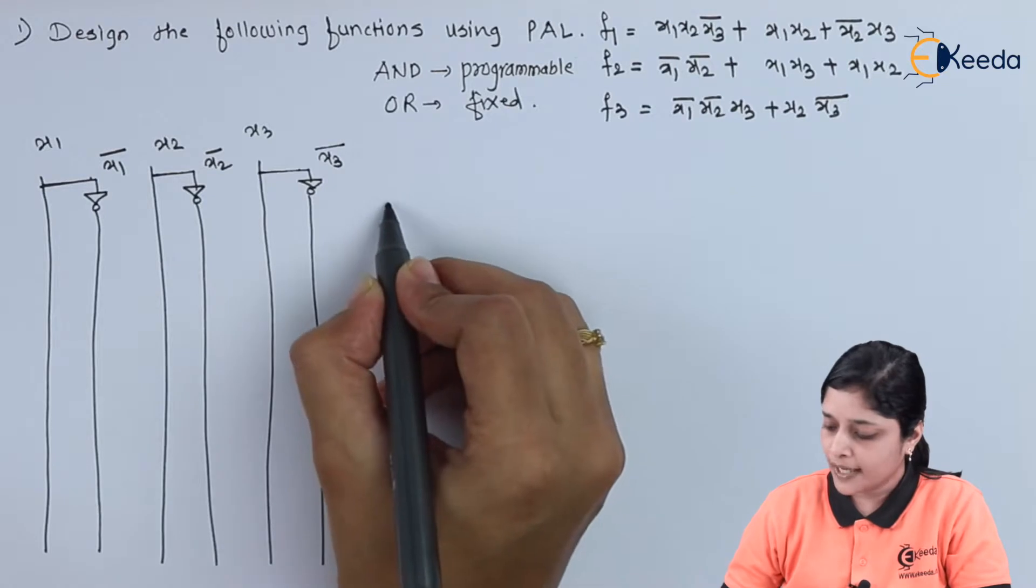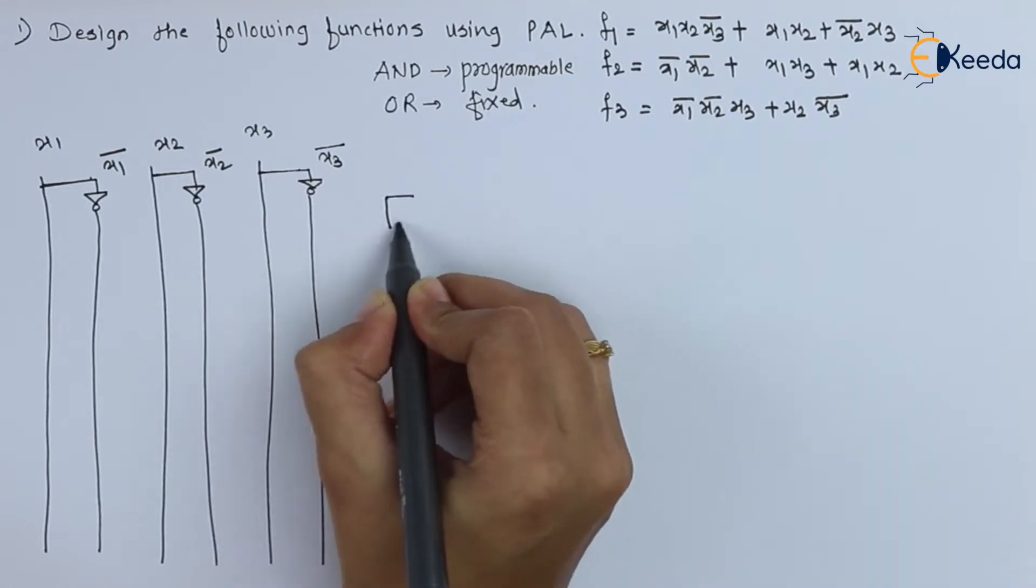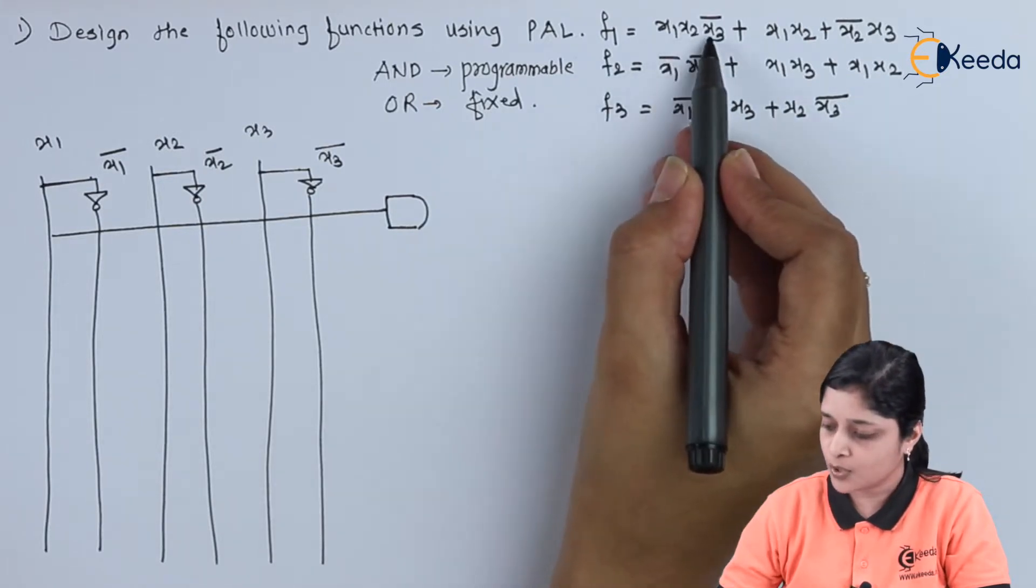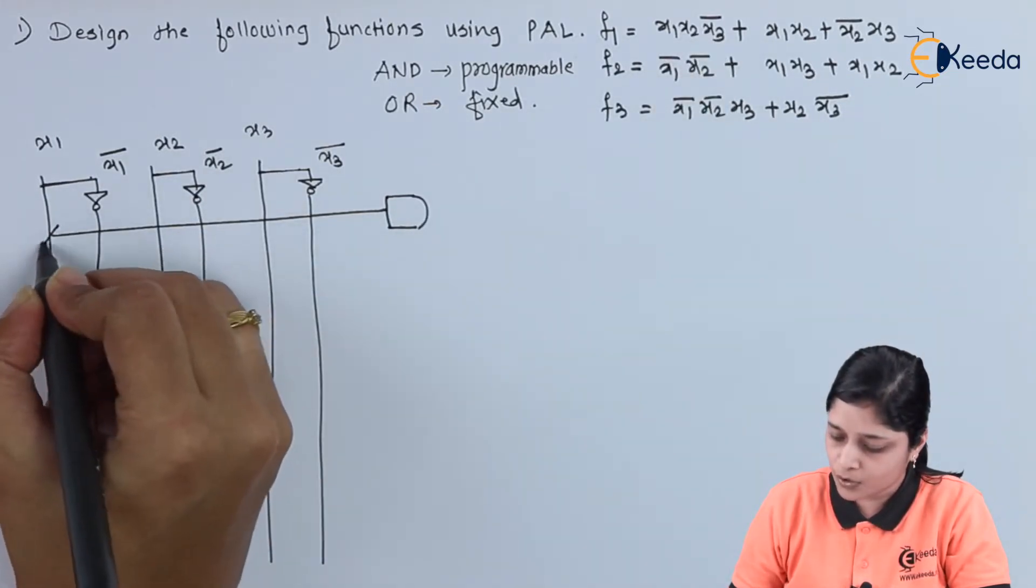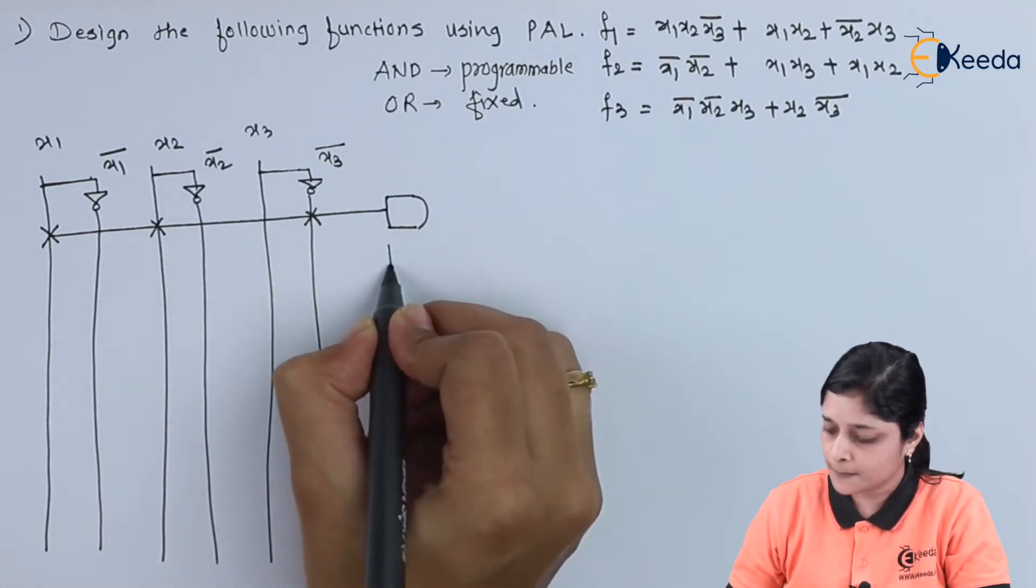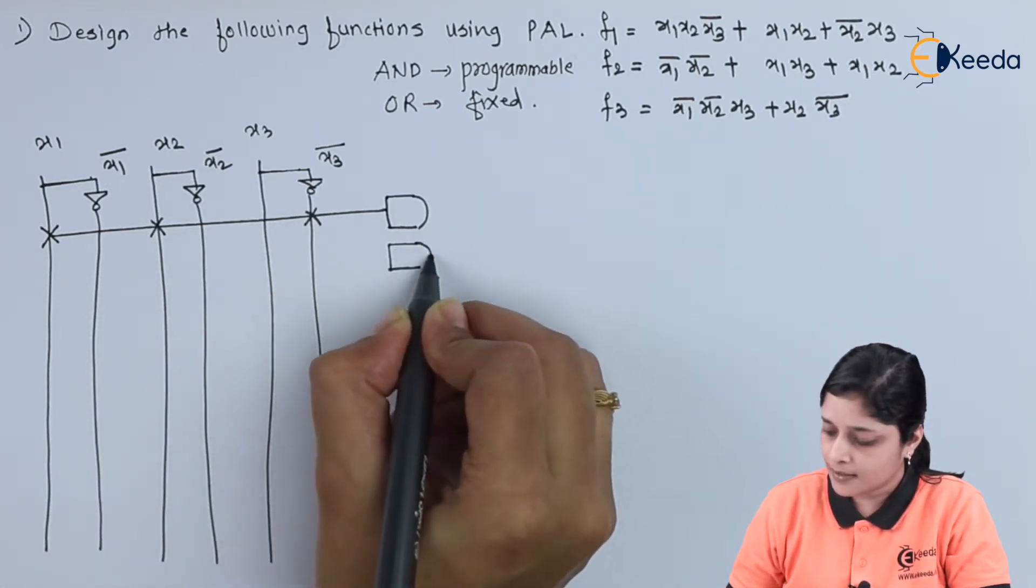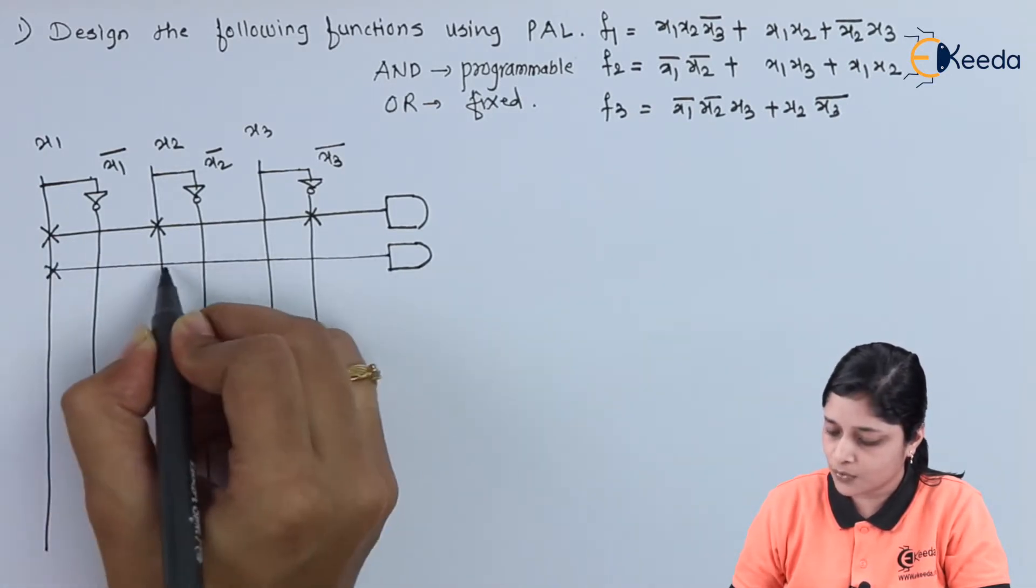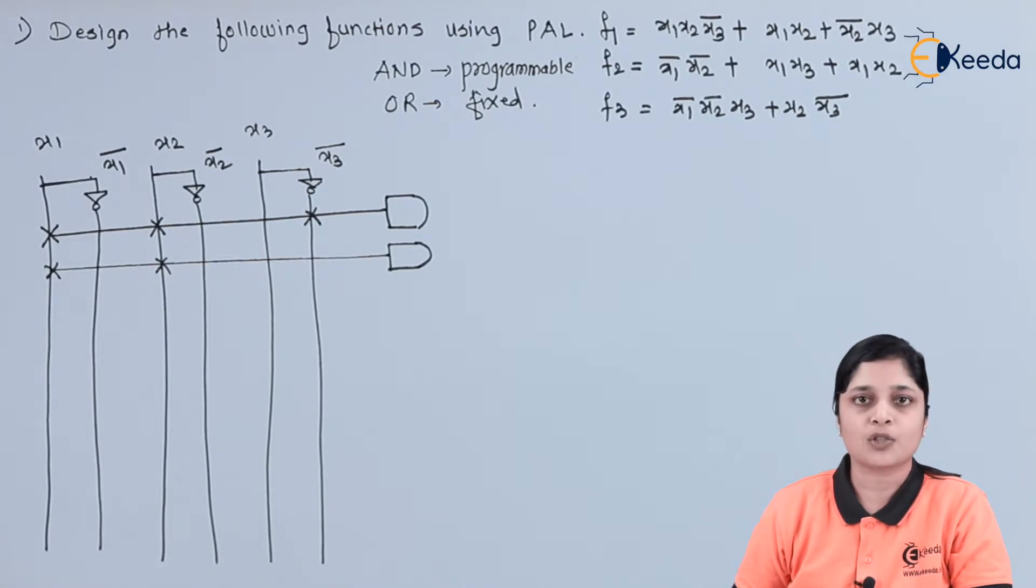Now we will draw AND gate for each term. First term consists of x1 x2 x3 bar, so we will make a cross for x1, x2, and x3 bar. Next, AND gate we will draw here for x1 and x2. This is your x1, next is your x2.